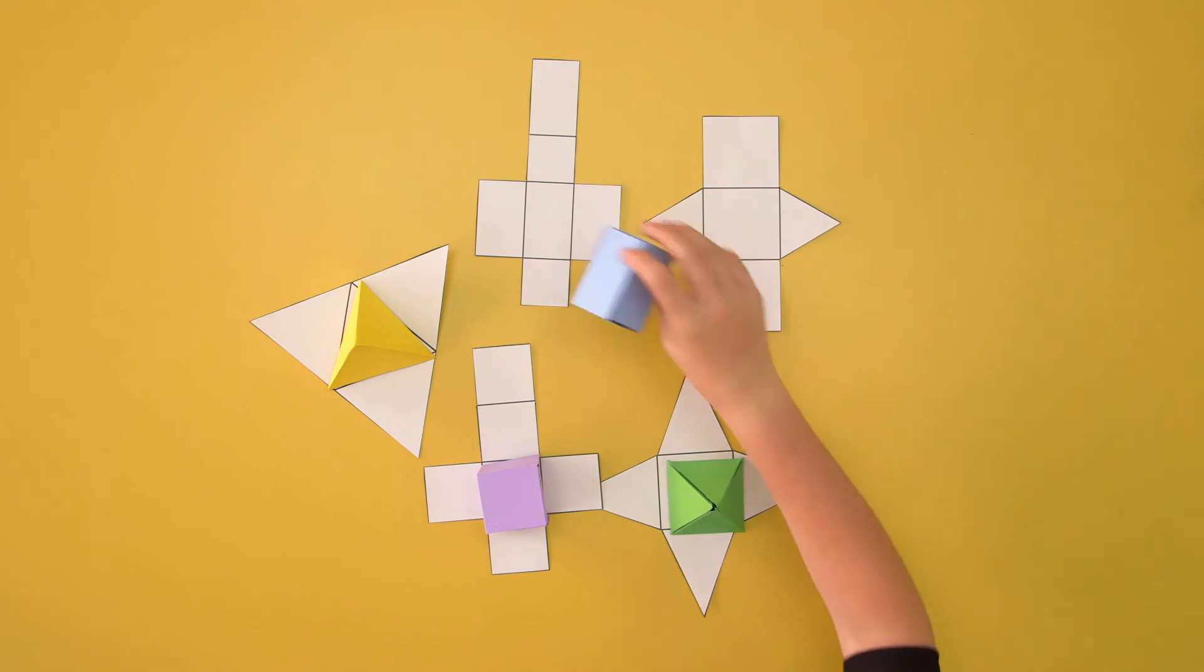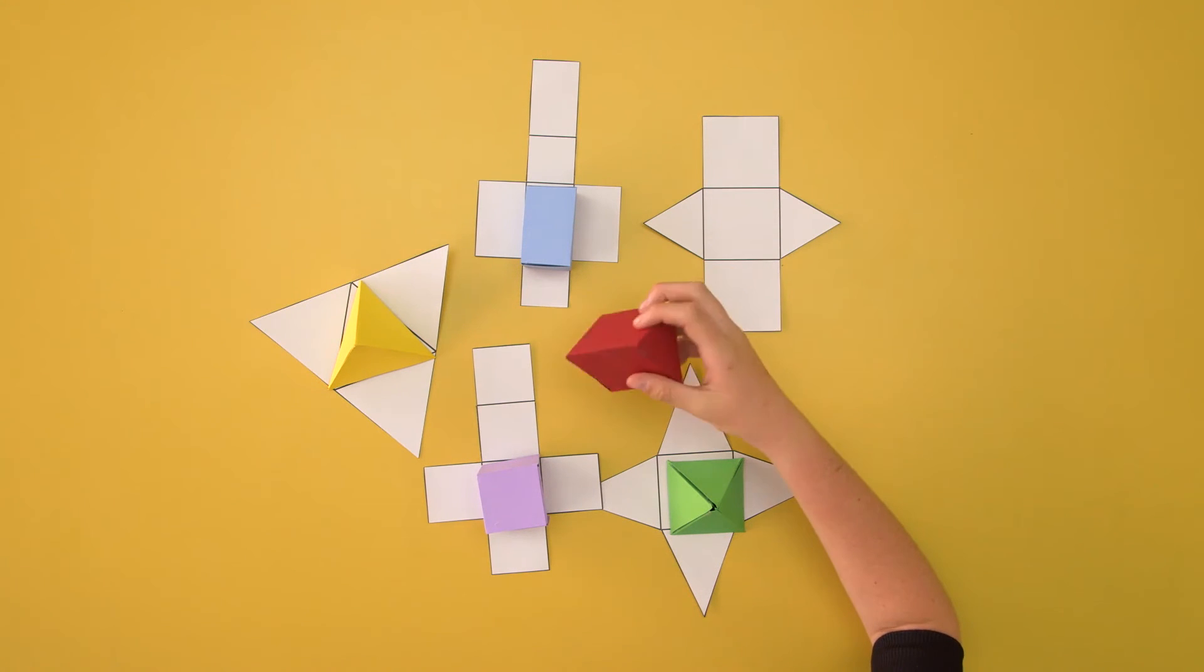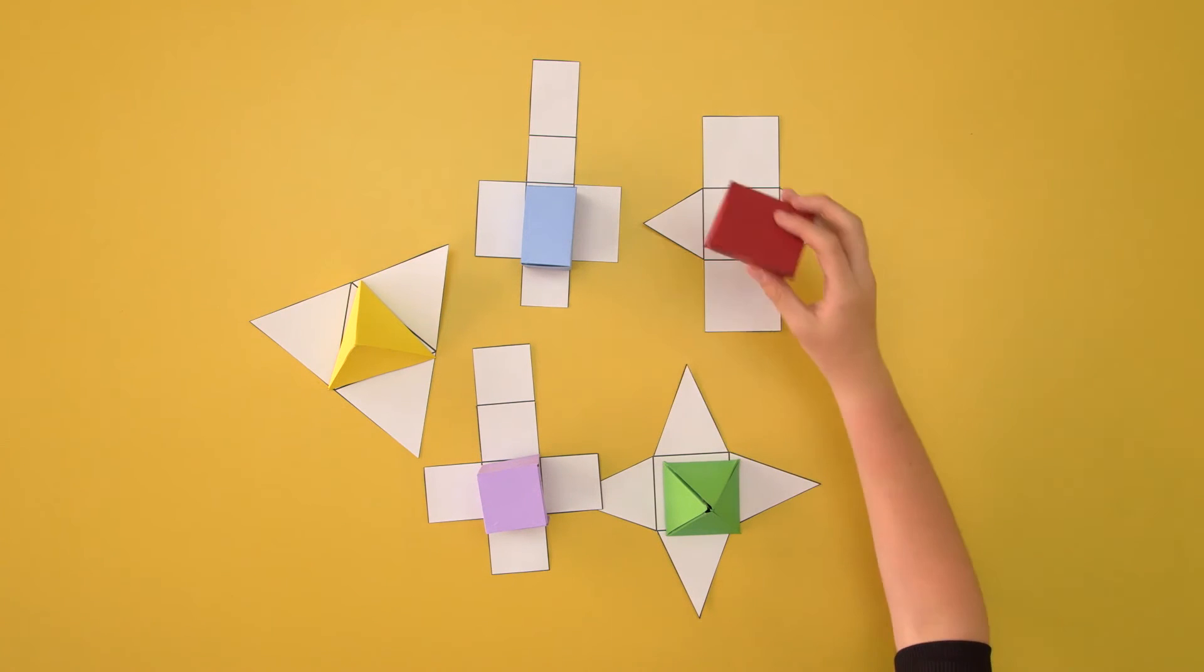Finally, I have this shape which is made up of two triangles and three squares, so it will match up with this net.